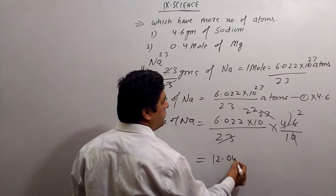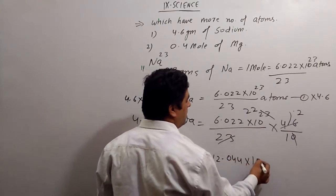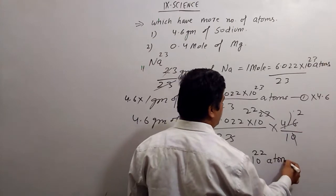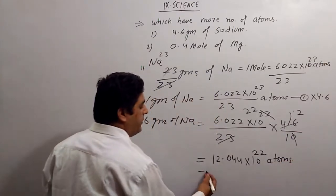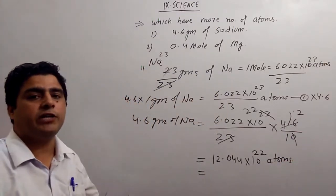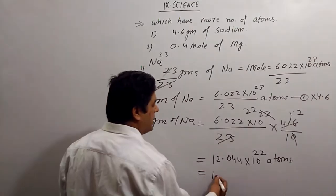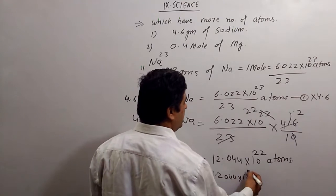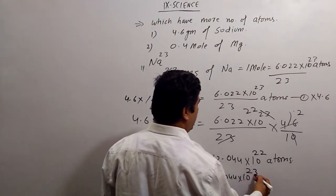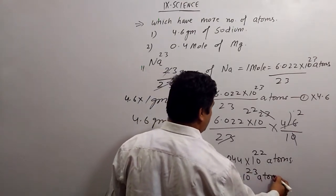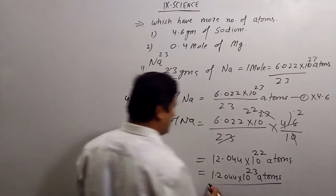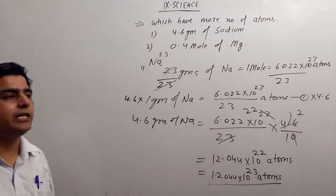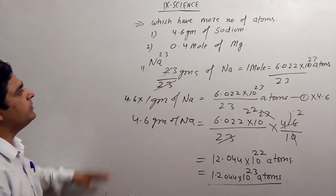Multiply with this value: 12.044 × 10^22 atoms. If you write it in scientific notation, it will be 1.2044 × 10^23 atoms. So this is the first answer.